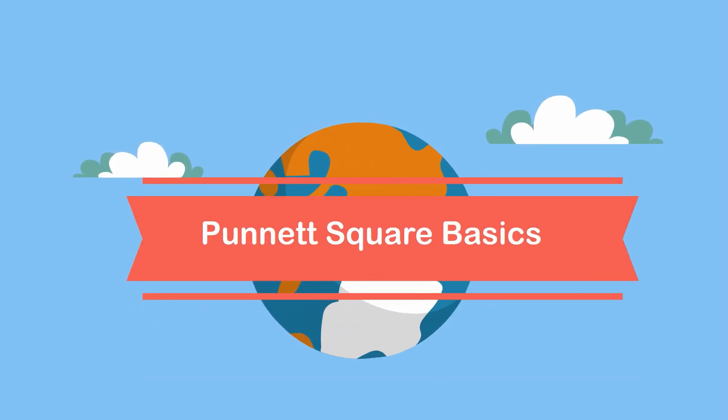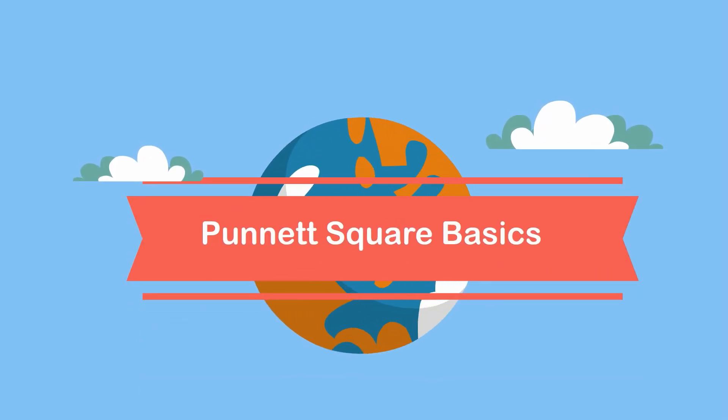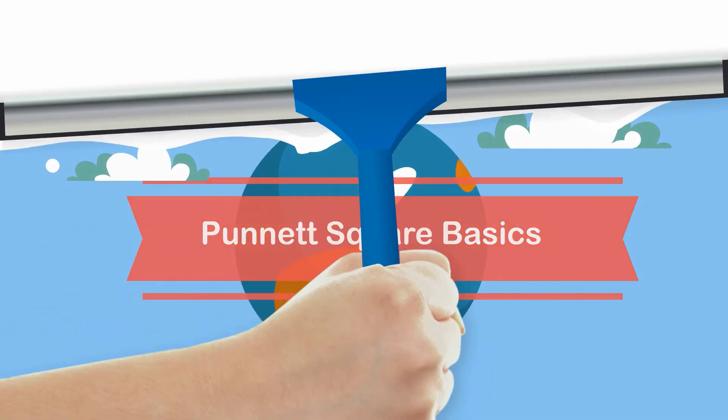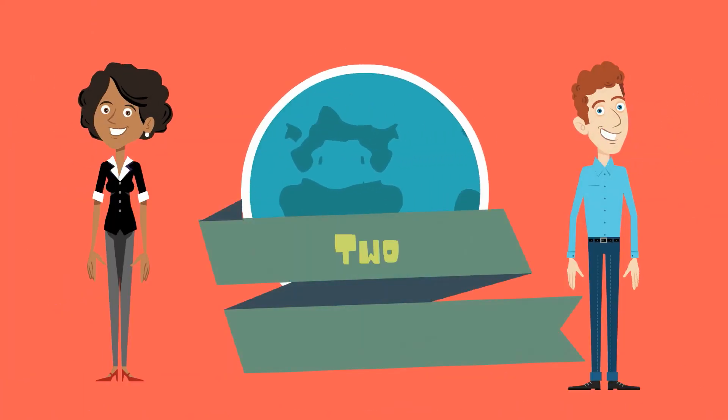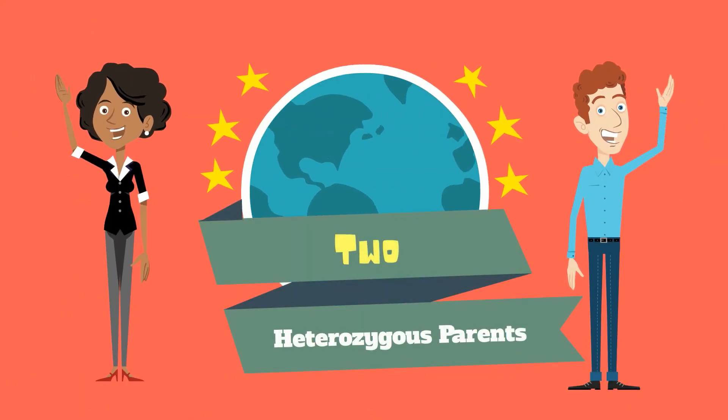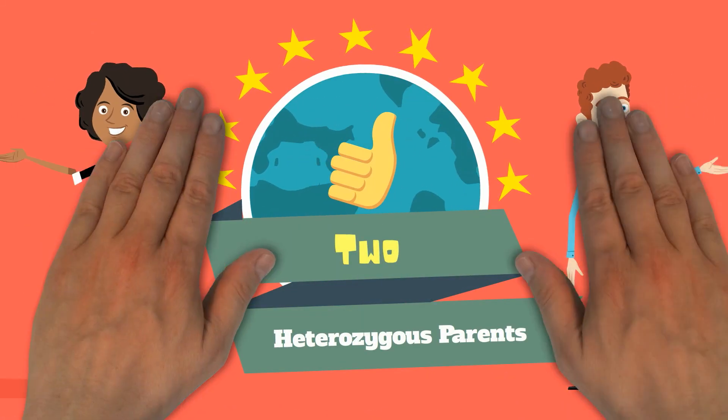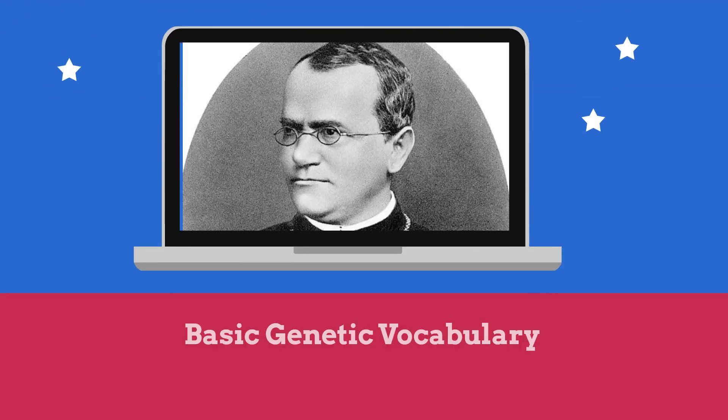Welcome to Mimou Math and Science. In this video, I'd like to talk about the basics of Punnett squares. In this example, we will have two heterozygous parents. In order to solve a Punnett square, let's review some basic vocabulary.